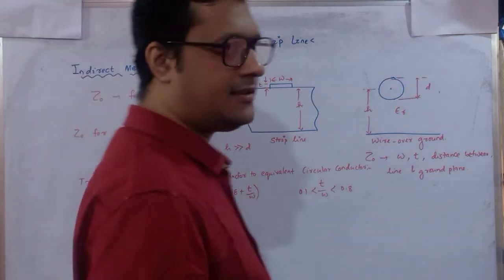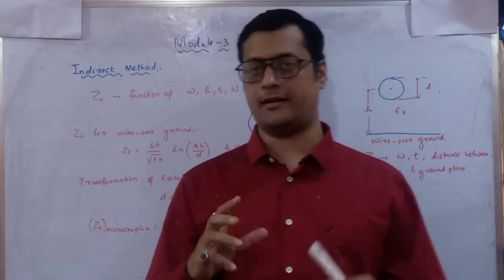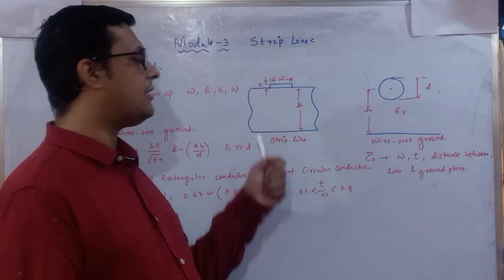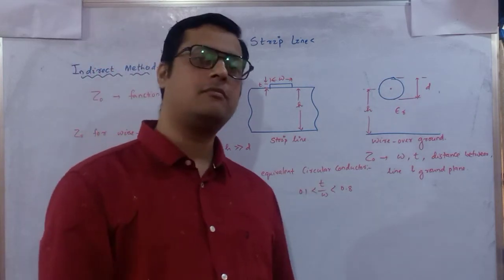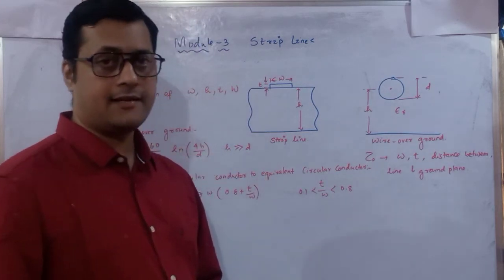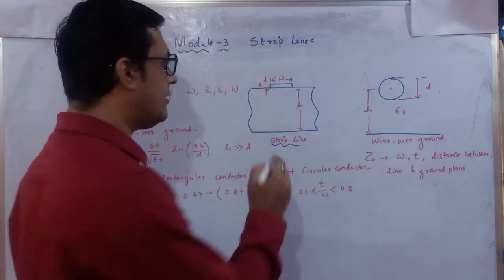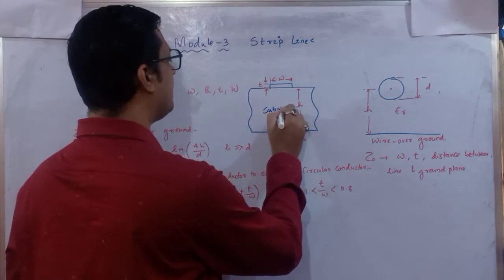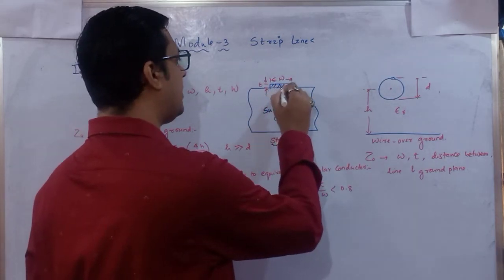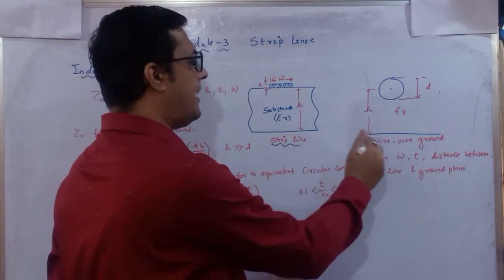To determine characteristic impedance and relative effective permittivity of the microstrip line, we use an indirect method. In this method, we consider a reference value with respect to the microstrip line and convert it. We consider a strip line with substrate height h, permittivity ε_r, and a small conductive plate of width w and thickness t placed over the ground.